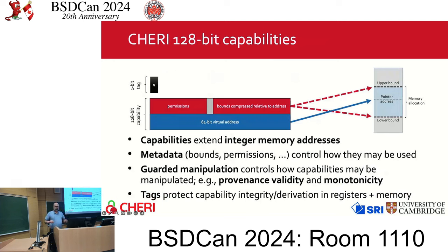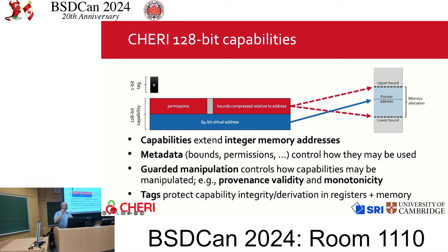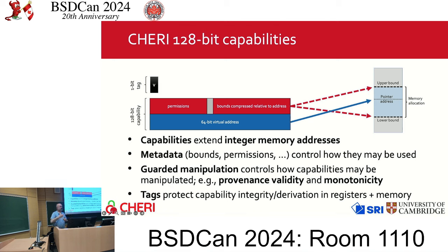CHERI extends pointers — in this case we have 128-bit capabilities. These extend 64-bit pointers, which are normally just addresses, with permissions and bounds — extra metadata — that control how they can be used. You must manipulate a capability through guarded manipulation, which means you must use special instructions. You can't just twiddle the bits. An incorrect derivation causes a tag to be cleared, and therefore any attempt to use the capability to access memory fails.